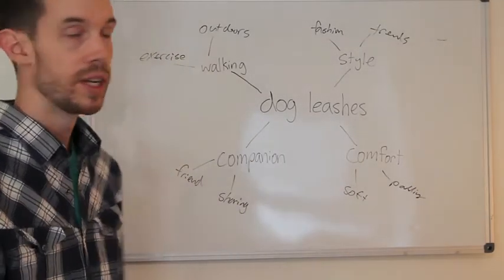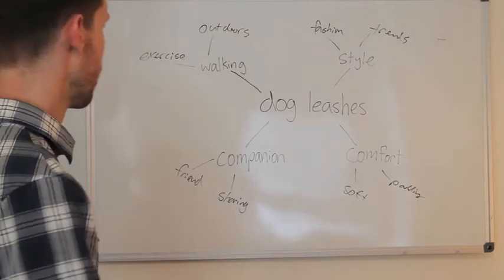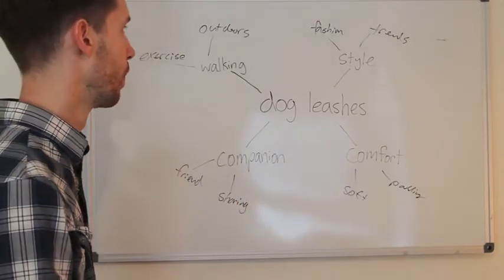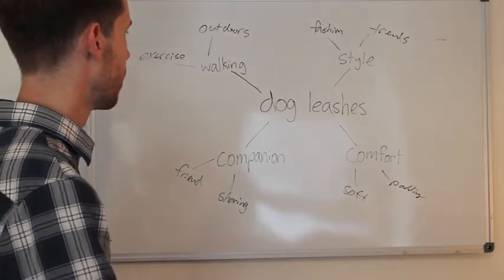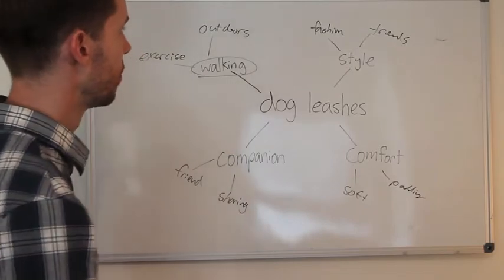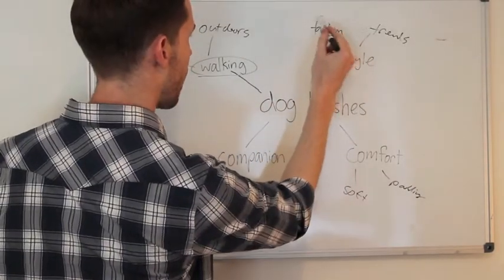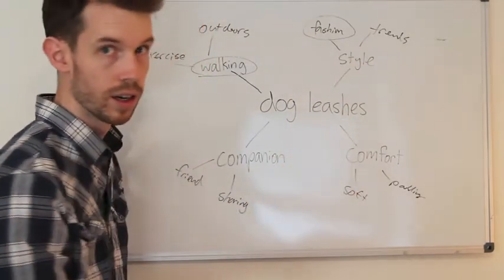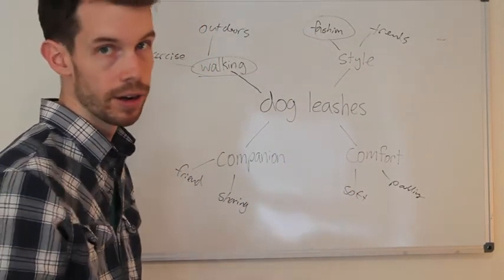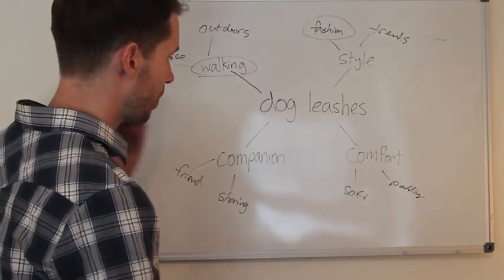After your mind map is complete, this is where you can get a little more analytical — actually looking at the words and seeing what you can use. Walking is definitely a big one, obviously — that's what you're using a leash for in the first place. Style is also kind of interesting. Fashion — if you have a dog, some people are into dog fashion. So those are some decent subjects to work off of.